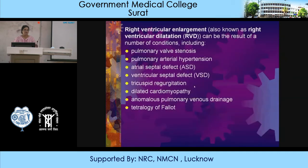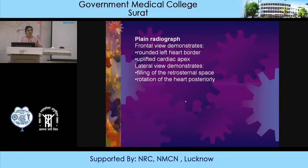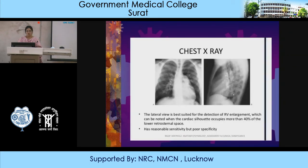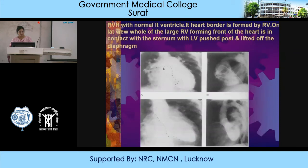Right ventricular enlargement — also known as right ventricular dilatation. On a plain radiograph, the frontal view demonstrates a rounded left heart border and an uplifted cardiac apex. On the lateral view, there is filling of the retrosternal space because the right ventricle is situated anteriorly, with rotation of the heart posteriorly. Since the right ventricle doesn't form any boundaries on the frontal view, it is better appreciated on the lateral view where the cardiac silhouette occupies more than 40% of the lower retrosternal space. On the lateral view, maximum part of the heart is in contact with the sternum while the left heart is pushed posteriorly and lifted off the diaphragm.